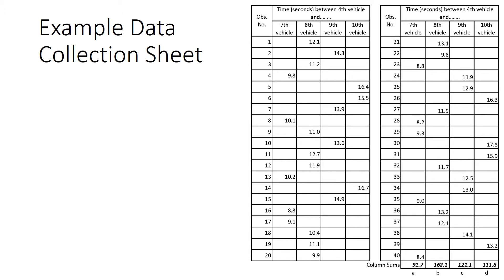One of the things we need to do is sum up each of the columns. If you look in the bottom right of the sheet, you'll see the total for the 7th vehicle column is 91.7 seconds, for the 8th vehicle is 162.1 seconds, for the 9th vehicle, 121.1 seconds, and finally, for the 10th vehicle, 111.8 seconds.